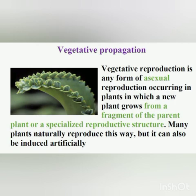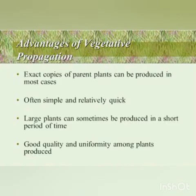We will discuss in detail in the next class how stems and leaves are used to give a full plant. In this picture, you can see small leaflets forming on a leaf; these small leaves will grow, fall down, and many new plants will be formed. In vegetative propagation, only one parent is involved, so exact copies of parent plants are produced in most cases, because only the parent's characters are passed on.